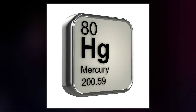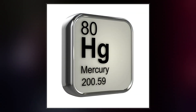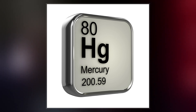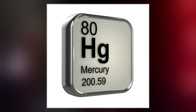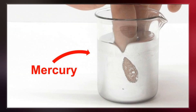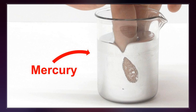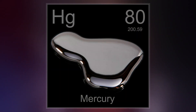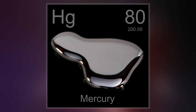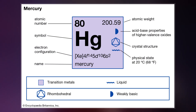The only other element that is liquid under these conditions is the halogen bromine, though metals such as cesium, gallium, and rubidium melt just above room temperature. Mercury occurs in deposits throughout the world, mostly as cinnabar. The red pigment vermilion is obtained by grinding natural cinnabar or synthetic mercuric sulfide.